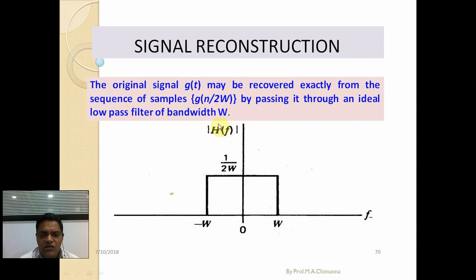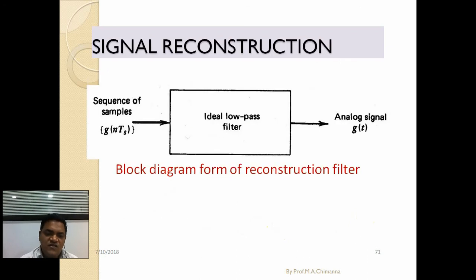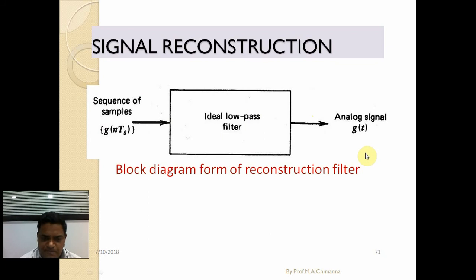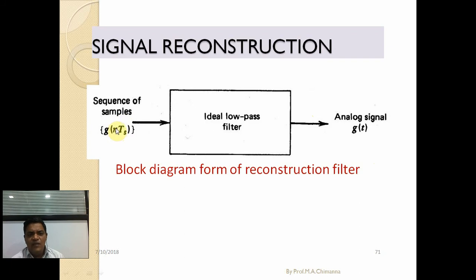The filter function is calculated in the frequency domain — here is W and here is W, with total bandwidth two W with respect to the frequency parameter. In signal reconstruction, the sequence of samples passes through the ideal low-pass filter. When passing through the ideal low-pass filter, we obtain the analog signal. Here g(n·T_s) — n number of samples — passes through the low-pass filter, and the high-frequency components are removed to form the analog signal.